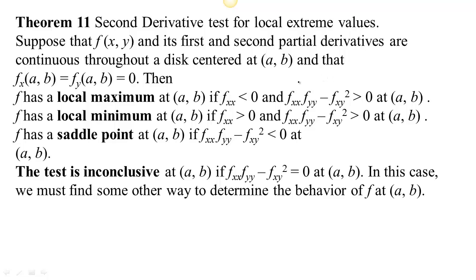In order to classify our max, min, and saddle points, we've been using what the book calls Theorem 11, the second derivative test. It says suppose you've got some function and its first and second partial derivatives are continuous in a region around some point (a, b), and that f sub x and f sub y at that particular point (a, b) are both zero. In other words, if you've got a function and at some particular point the gradient is zero, that means that the tangent plane is going to be level for that function.